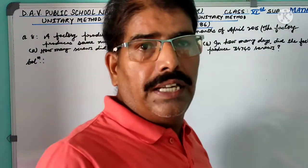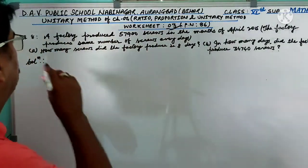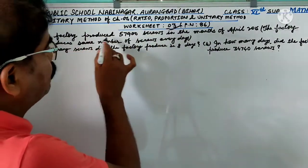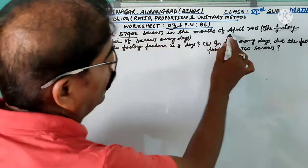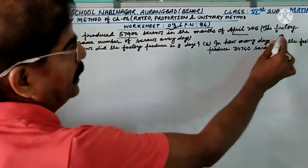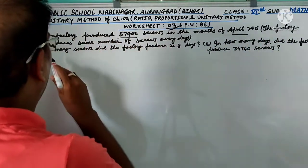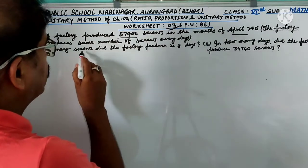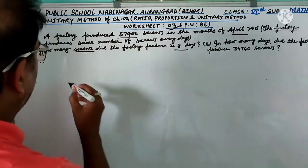Yes, friends, last question of worksheet 3 is question 8. A factory produced 57,900 screws in the month of April. The factory produces the same number of screws every day. How many screws did the factory produce in 8 days?